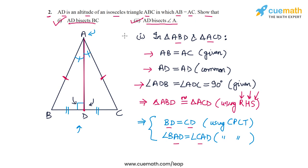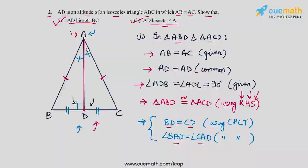Remember the key outcome of this problem: if you have an isosceles triangle and draw the altitude from the vertex to the base, that altitude is also a median of the triangle and also an angle bisector of the triangle. It bisects the base and it bisects the angle at the vertex.